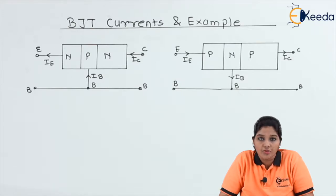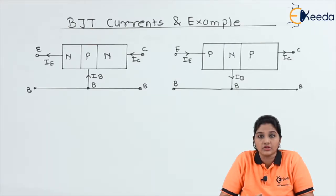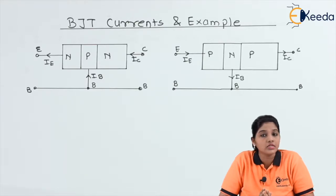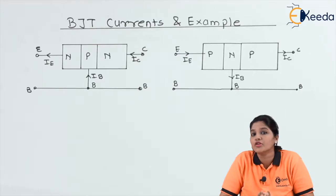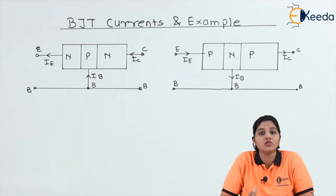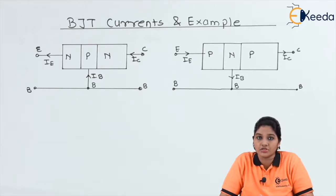BJT is basically a three terminal device and the terminals are emitter, base, and collector. Depending upon the construction of BJT, there are two types of transistor: NPN and PNP. In case of NPN transistor, the current flows due to the movement of electrons, and in case of PNP transistor, current flows due to the movement of holes. Now let's see how the BJT current formation occurs in NPN and PNP transistors.